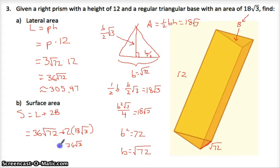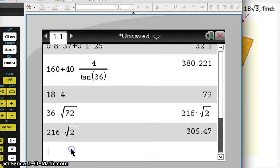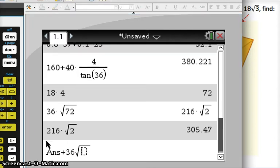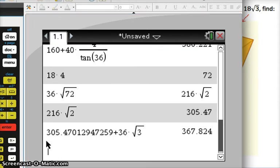This thing simplified was 216 times the square root of 2. That's a plus, by the way. That doesn't get any more simplified. I'm just going to have to go to decimals from there. So add 36 square root of 3 to what I already had. And I get 367.82.